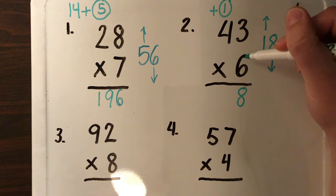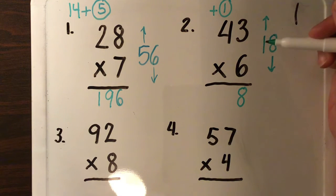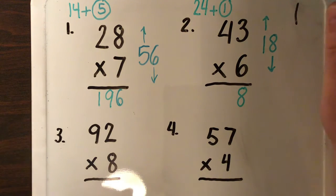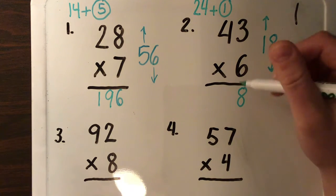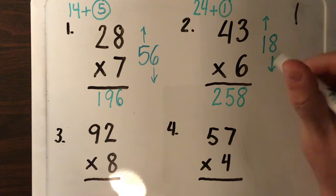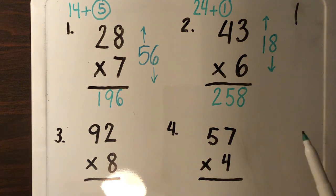Okay, now I do six times four. Six times four is 24. I put my 24 next to my one. 24 plus one is 25. I put my 25 down here. My answer is 258.